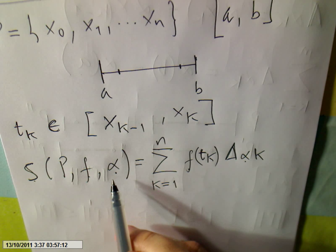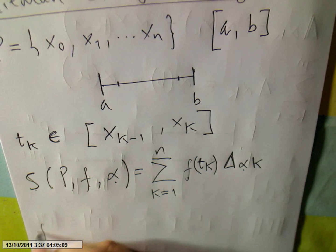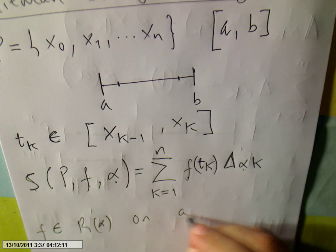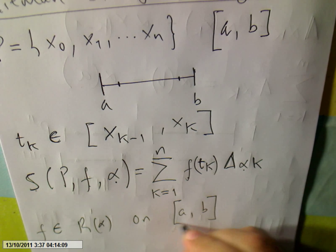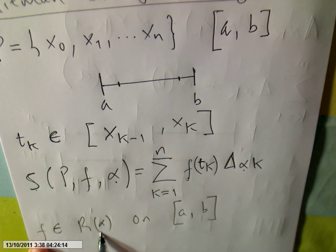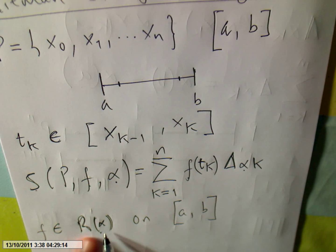We say f is Riemann-integrable with respect to alpha on [a, b] — written as f belonging to R(alpha) on [a, b]. That R stands for Riemann-integrable with respect to alpha on [a, b].